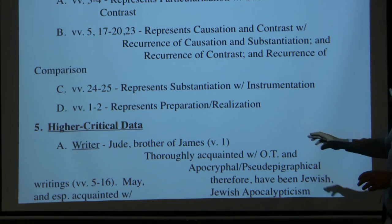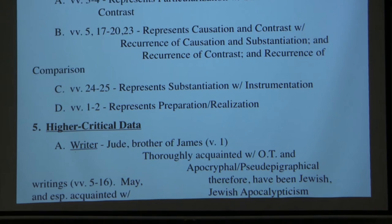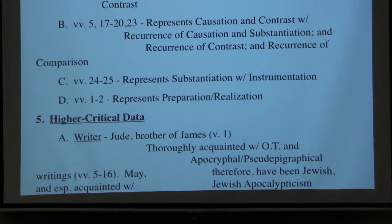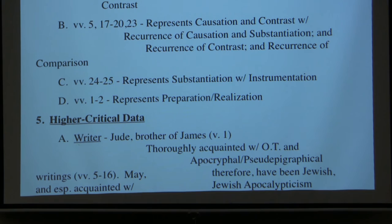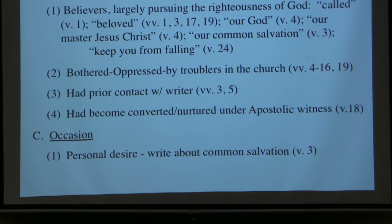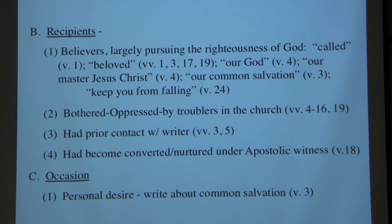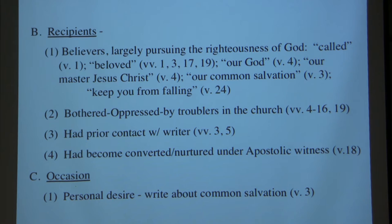Then higher critical data, just on the basis of the book itself: the writer identifies himself as Jude, the brother of James. He was thoroughly acquainted with the Old Testament and the apocryphal and pseudepigraphical writings, apparently, and may therefore have been Jewish, especially acquainted with Jewish apocalypticism. The recipients were believers largely pursuing the righteousness of God — described as called and beloved — oppressed by ungodly in the church.